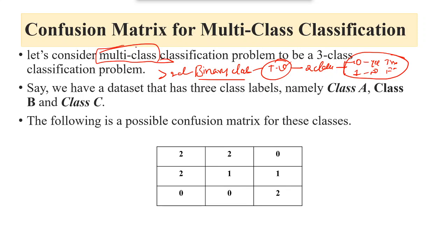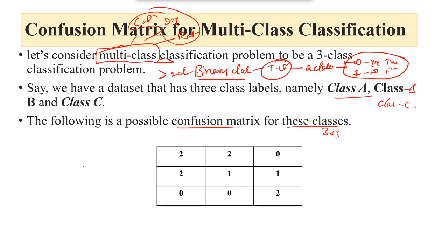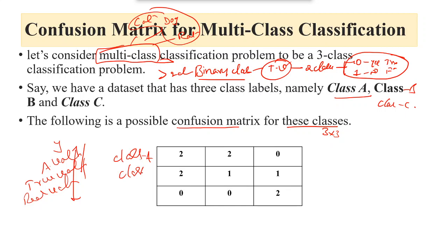Multiclass means, for example, Cat, Dog, and Rat — three different kinds of classes. In this example, we are considering three classes: Class A, Class B, and Class C. The resulting confusion matrix is a three-by-three matrix. On the y-axis, I am considering the true values or real values — Class A, Class B, and Class C. On the x-axis, I am considering the predicted values.